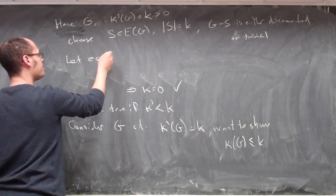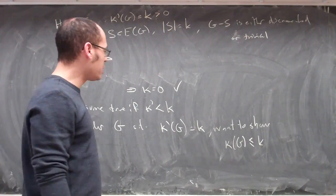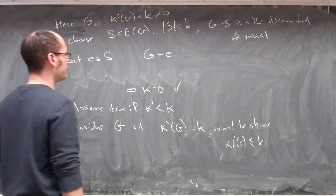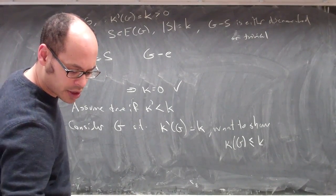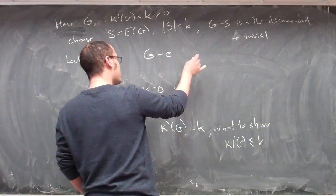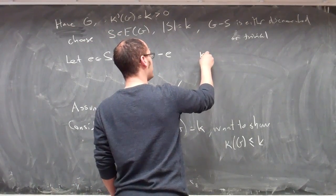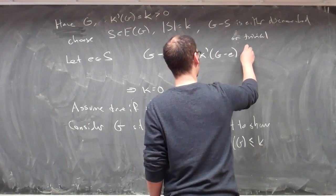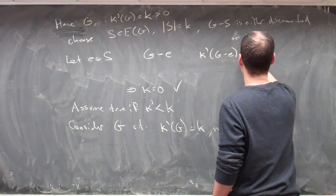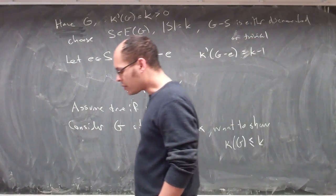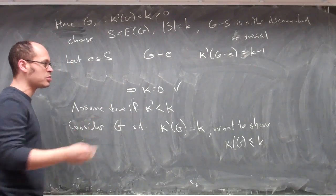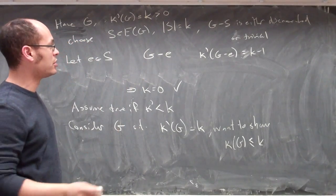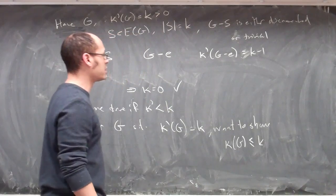Let e be such an edge, and what we want to do is consider what happens if I look at the graph with e removed. If I look at G minus e, then the edge connectivity of this graph is actually equal to k minus one. The set S was minimal, so I know I can't get away with less than k minus one. And if I remove the remaining elements of S, I'll produce something that's either trivial or disconnected, so κ' of G minus e is k minus one.